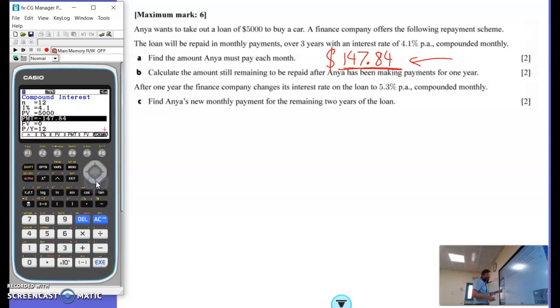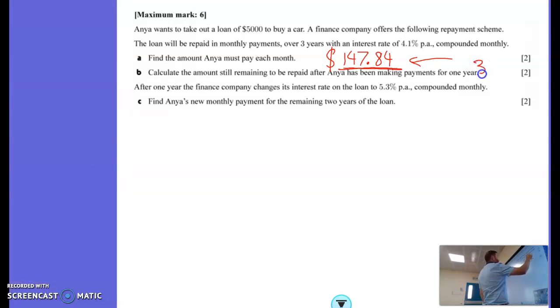What's my future value? That's the calculation we're looking for with this question. Let's go to that future value, and we should get, there we go, negative $3401.09, or $3401.10, if we were doing it to the nearest cent. So, she still owes $3401.10.